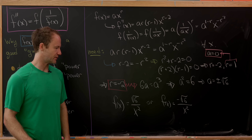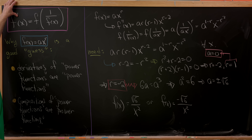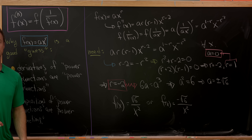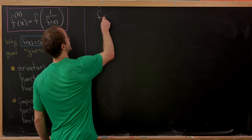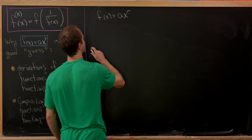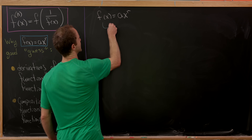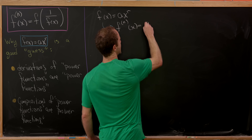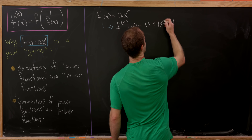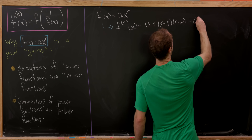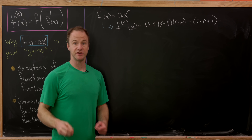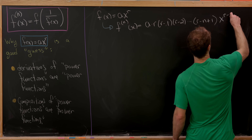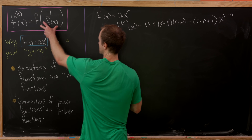Let's bump this up a bit. Instead of looking at the second derivative case, let's look at the case when we take the nth derivative and get this composition. With f(x) = a·x^r, the nth derivative will be a times r times (r−1) times (r−2) down to (r−n+1) — so n multipliers — times x to the (r minus n).